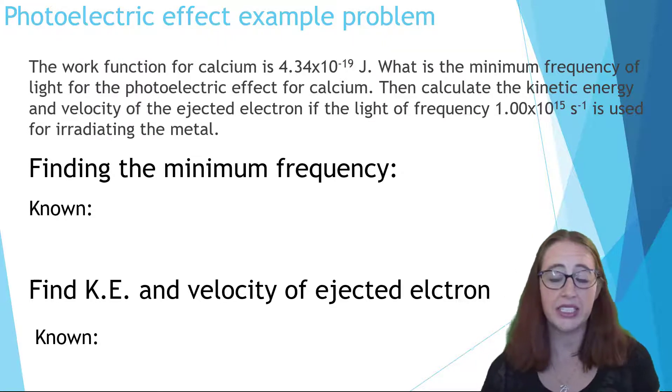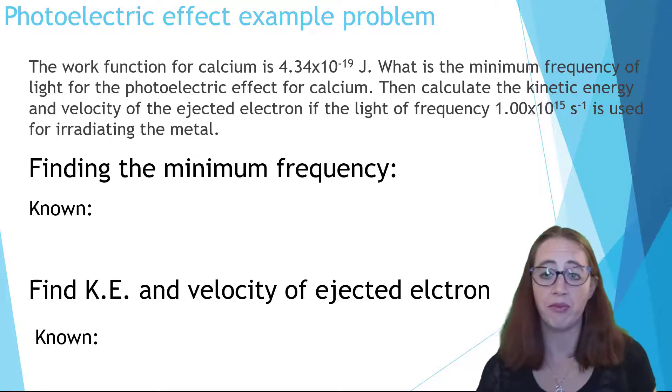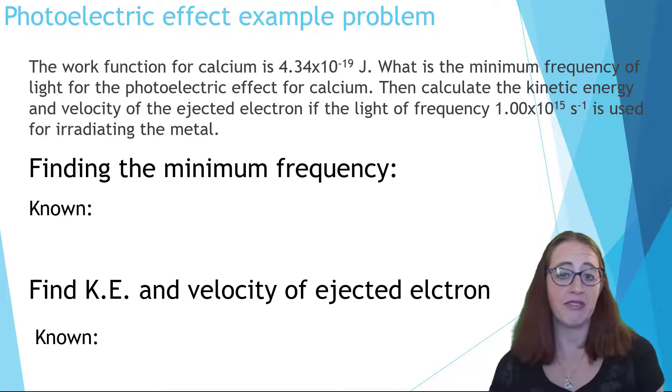For this we'll need to use the steps highlighted in our earlier discussion of the equations and the concepts from our previous video. It is in many ways a two-in-one problem. We must first find the threshold frequency and then find the kinetic energy and the velocity at a different frequency of light.